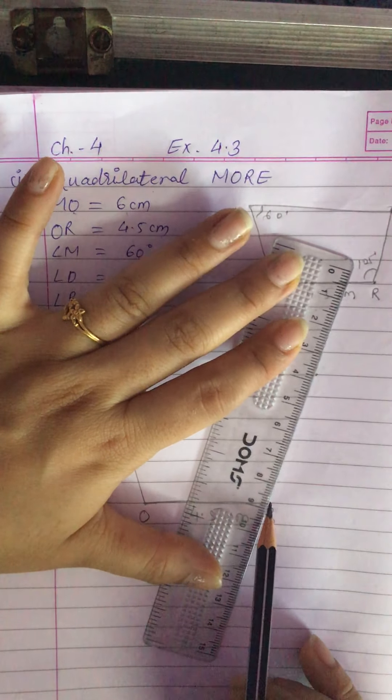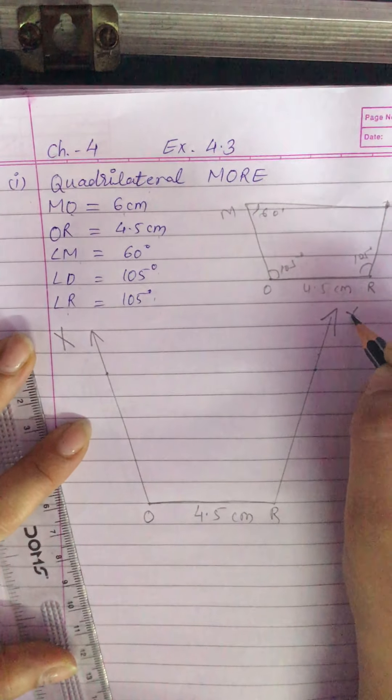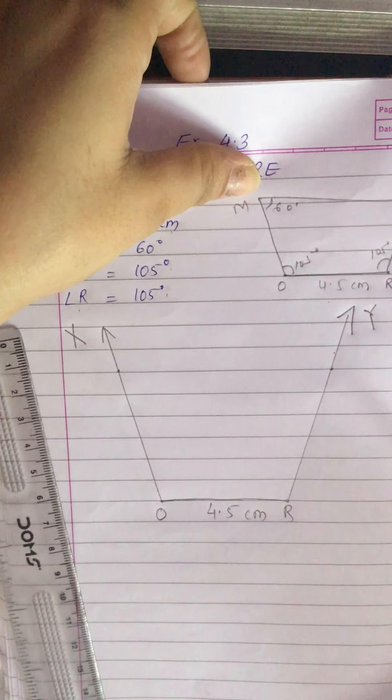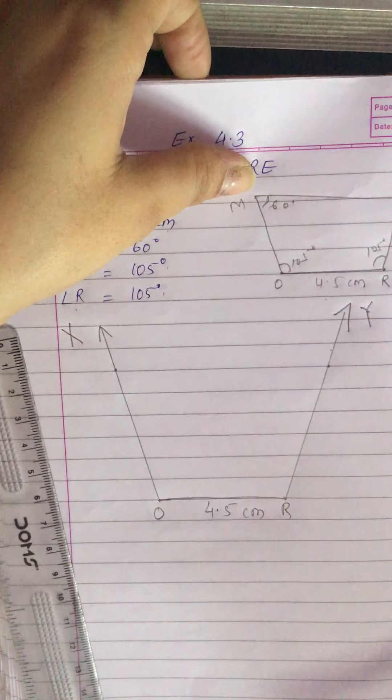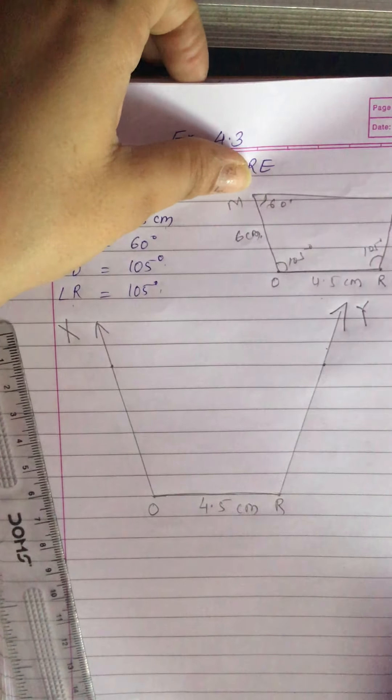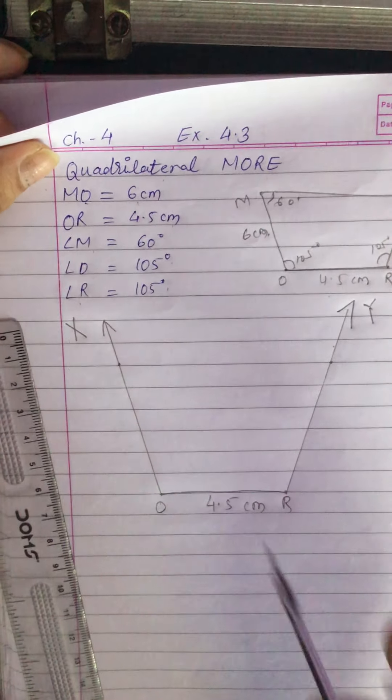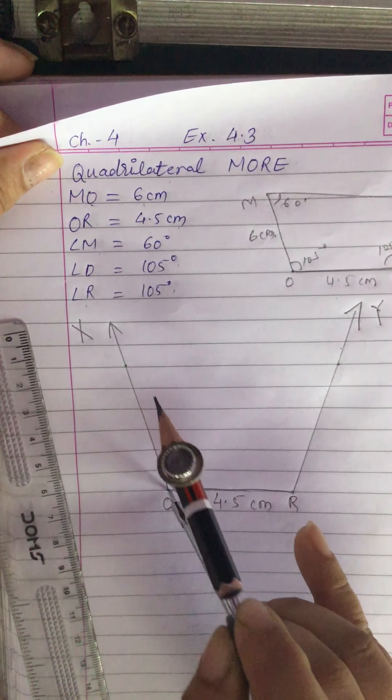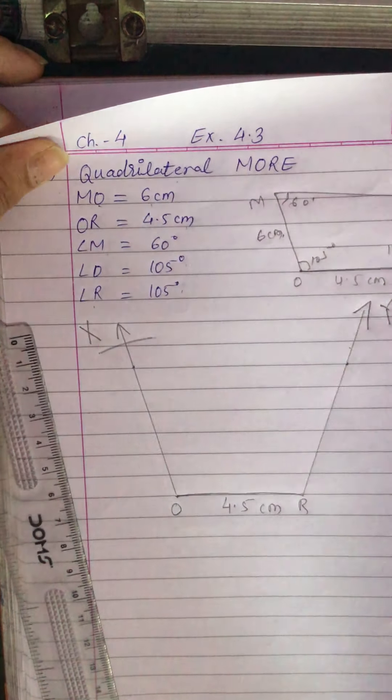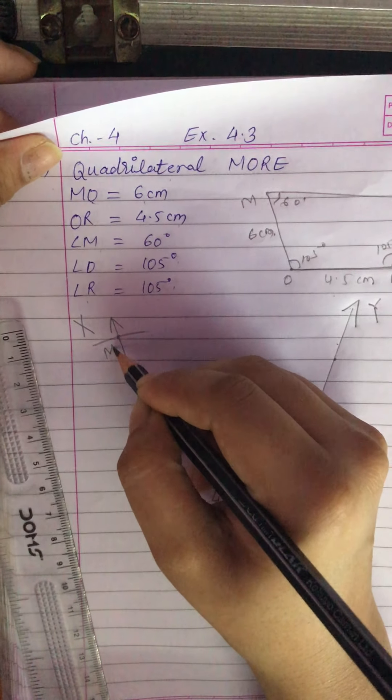This is ray X and this is ray Y. Now we want point M. At point M we have to draw 60 degrees. First see the distance between O and M, which is 6 cm. So taking O as center, open your compass with 6 cm radius. Put the pointer on O and cut an arc which intersects ray OX at M. So it is point M.